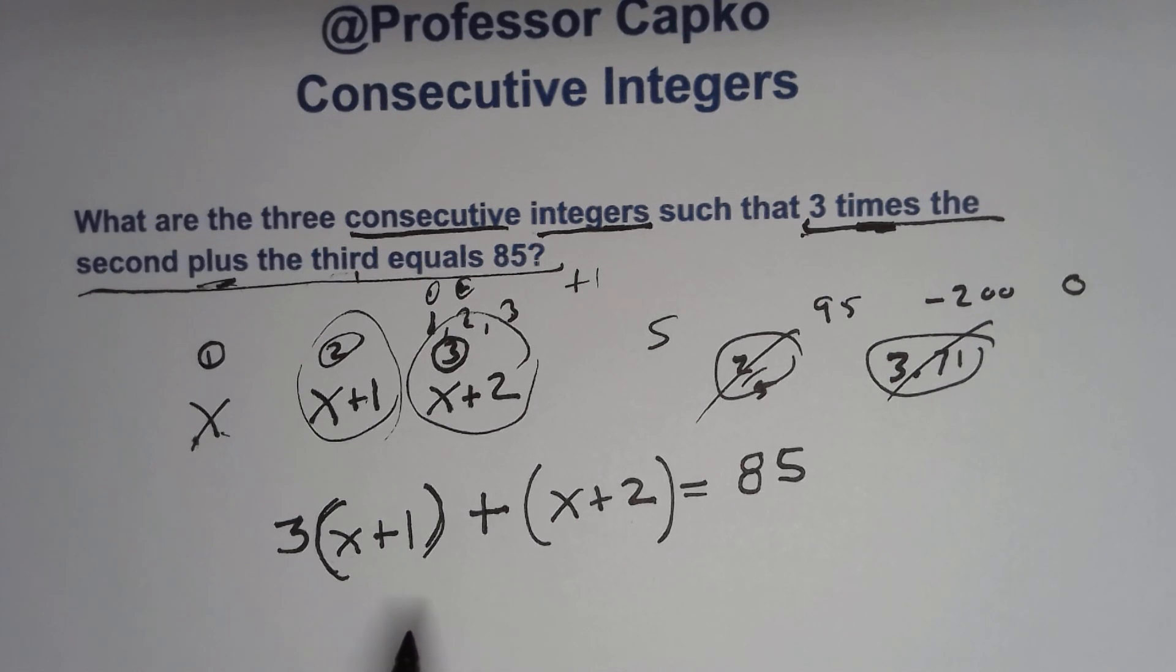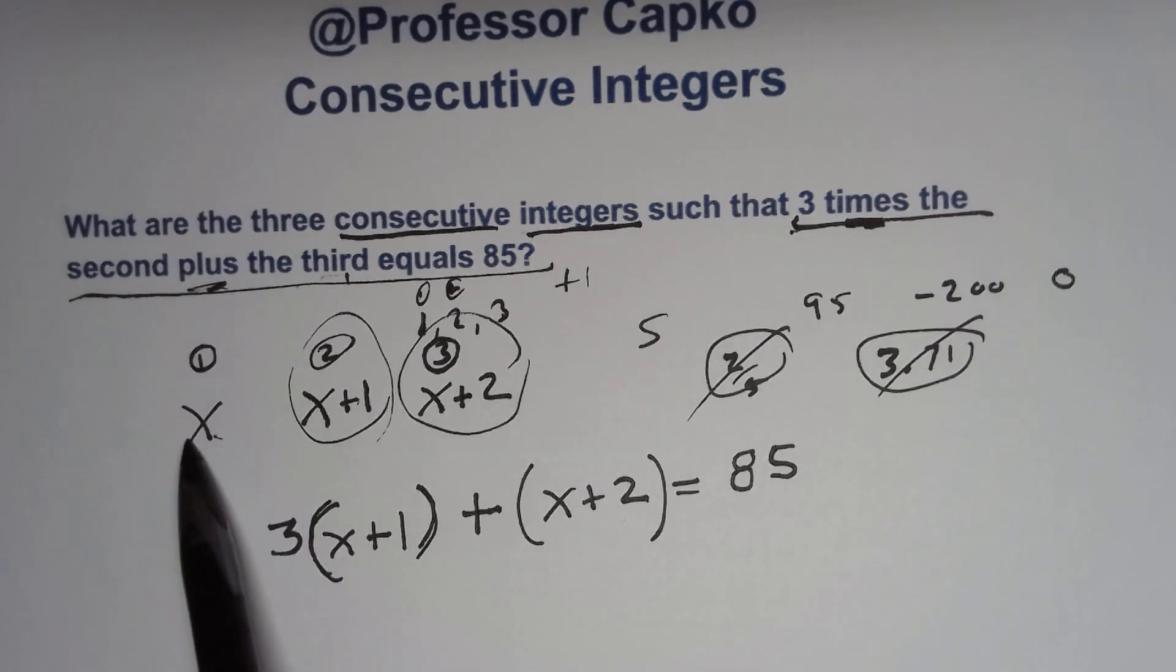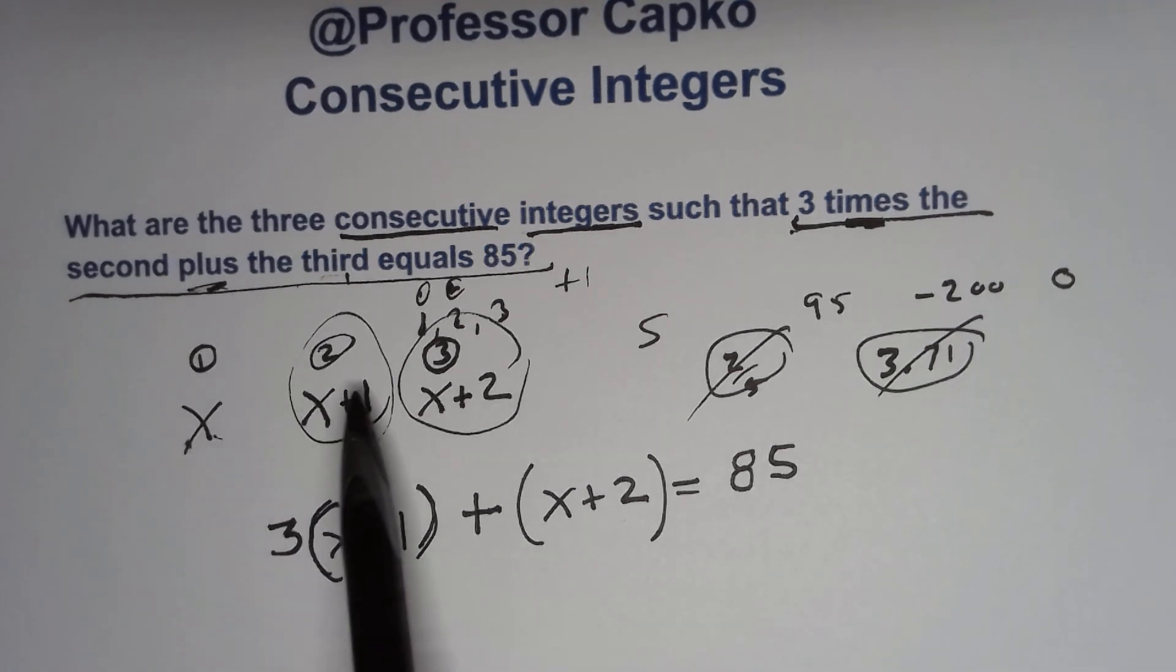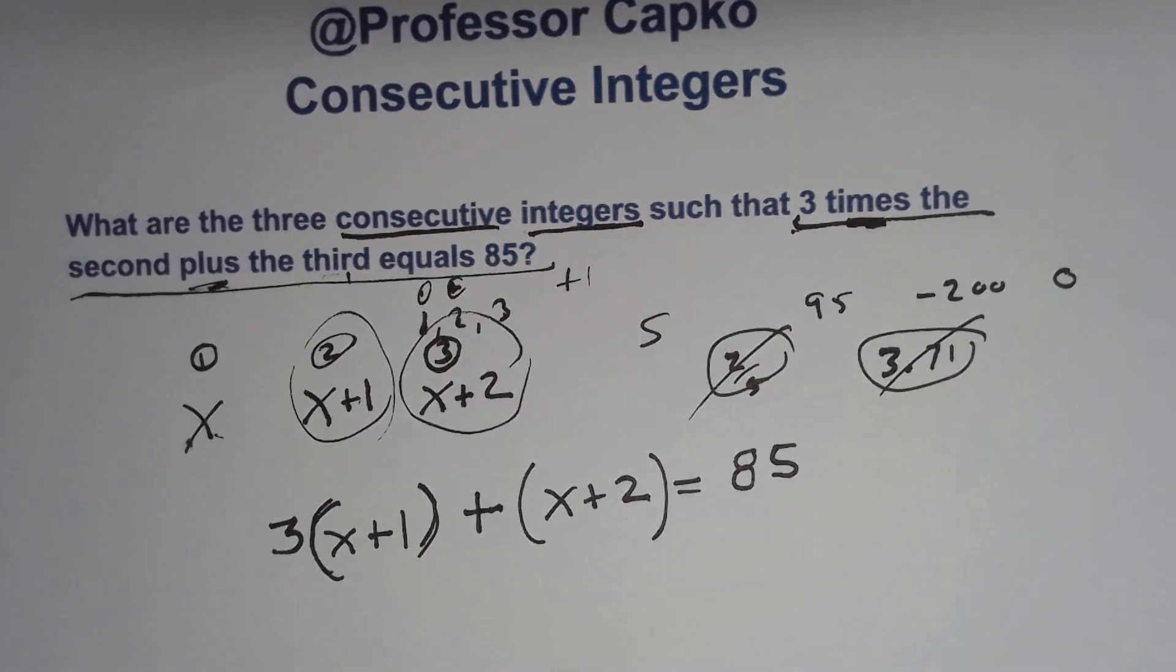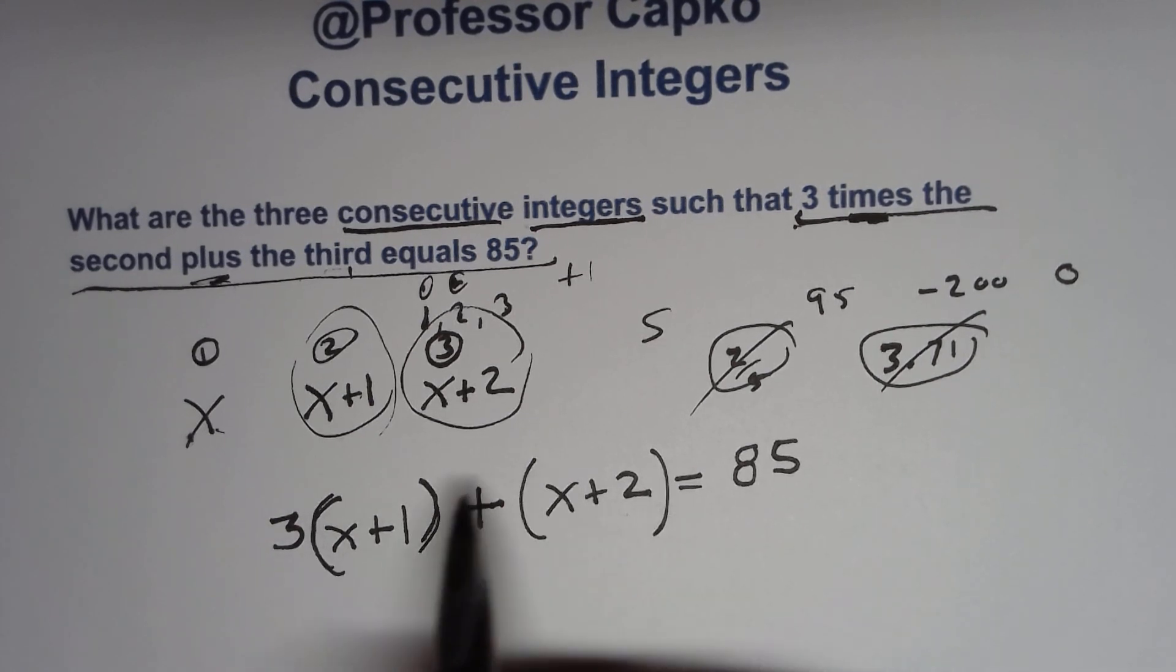What we're going to do now is we're going to solve for X. And when we solve for X, that's going to give us our first integer. And once we have that, then we can plug in to get the second and the third. So how do we solve for X? Well, we want to get it by itself. And so I need to go ahead and clean this up. So let's take care of this multiplication first. So I'm multiplying three times everything in the parentheses. So I need to distribute.